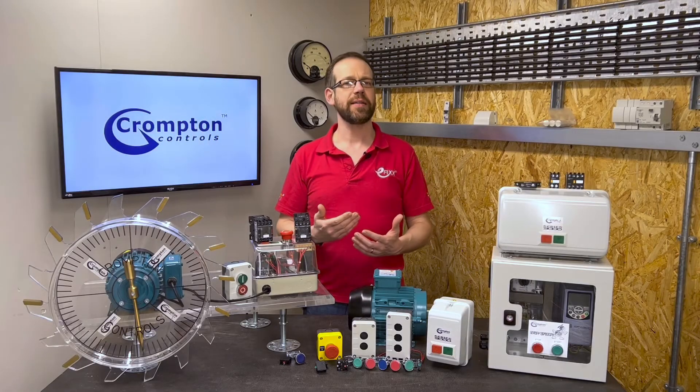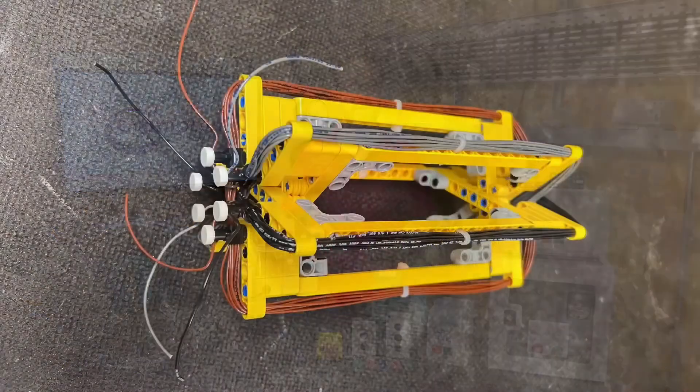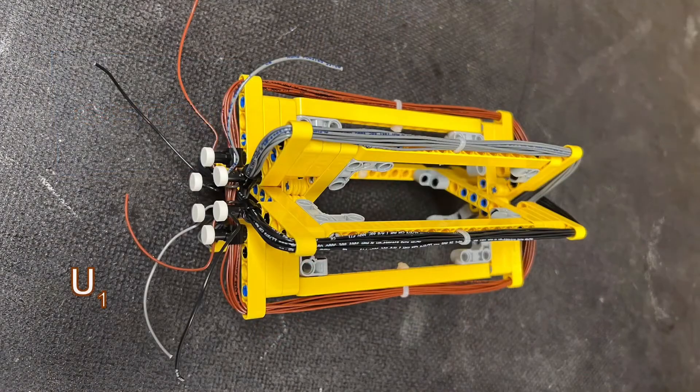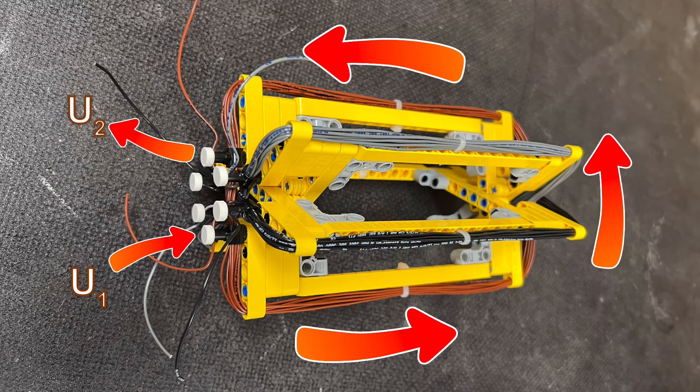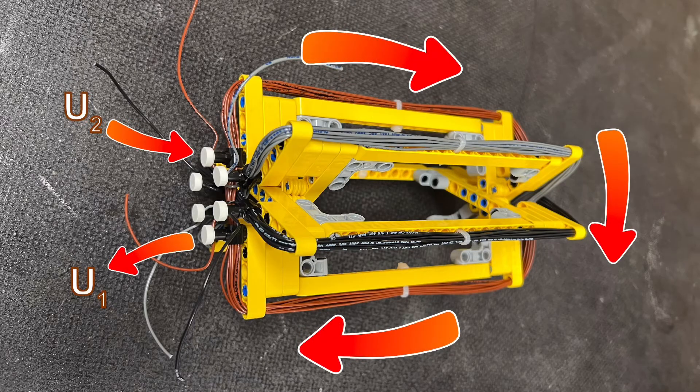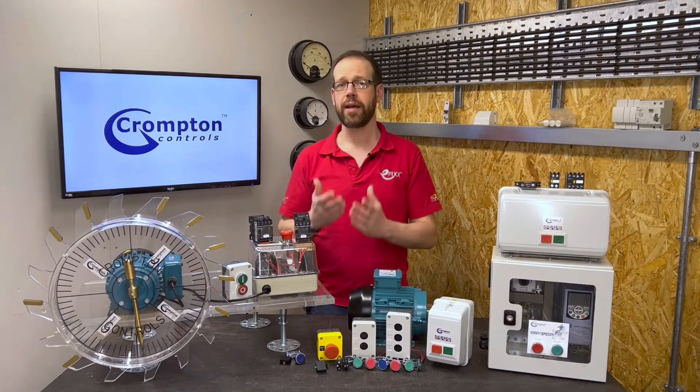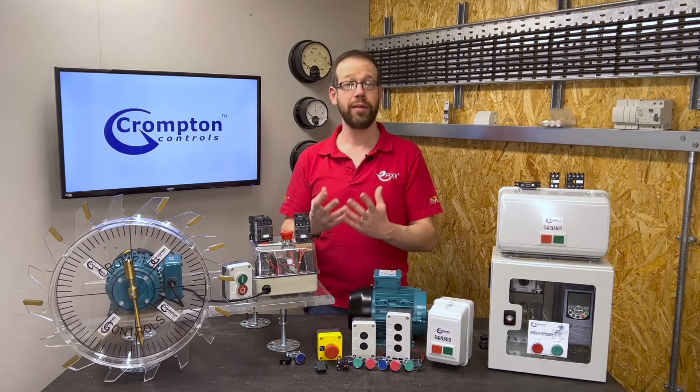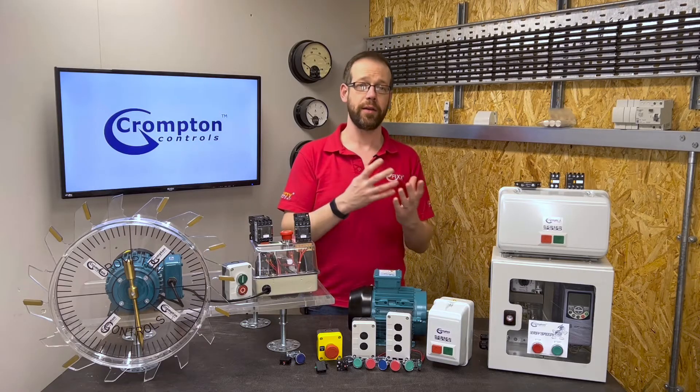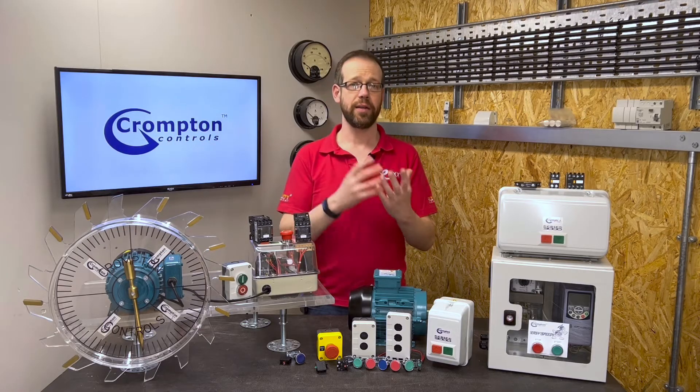That's going to be critically important in just a moment. So we're going to say that when the current is in the positive part of the cycle, it's going into the terminal marked with a one and coming out of the terminal marked with a two. And when the current goes into the negative part of the cycle, it's changed direction and goes the other way. For simplicity, we'll connect the motor in star, which means we'll connect all the wires marked two together and connect U1 to line one, V1 to line two, and W1 to line three.